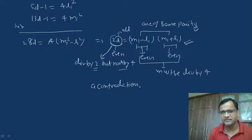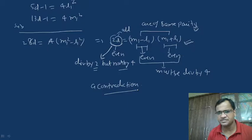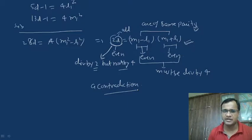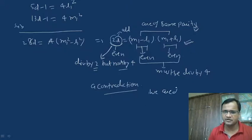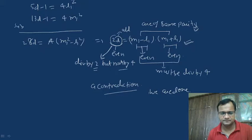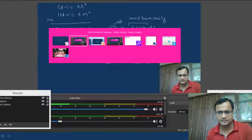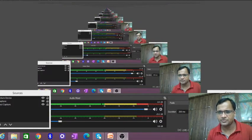Since we have arrived at a contradiction, our initial hypothesis was wrong. Hence, there exists at least one of 2d − 1, 5d − 1, or 13d − 1 which is not a perfect square. Hence, we are done. Thanks for watching.